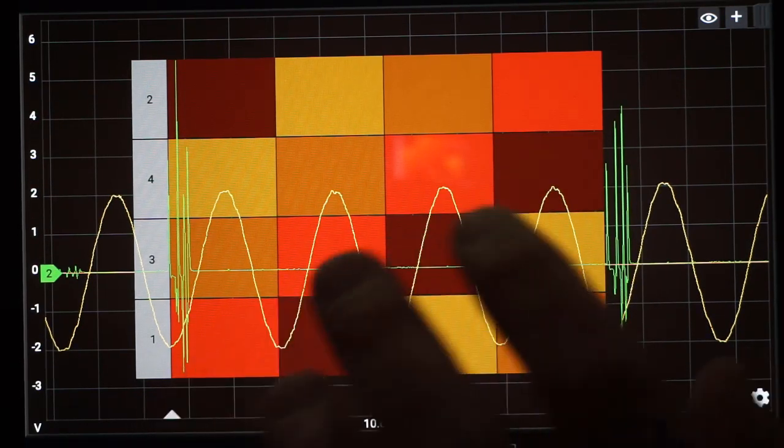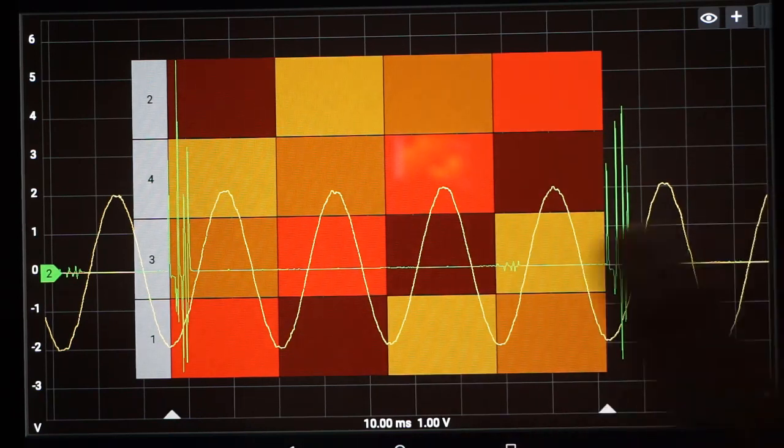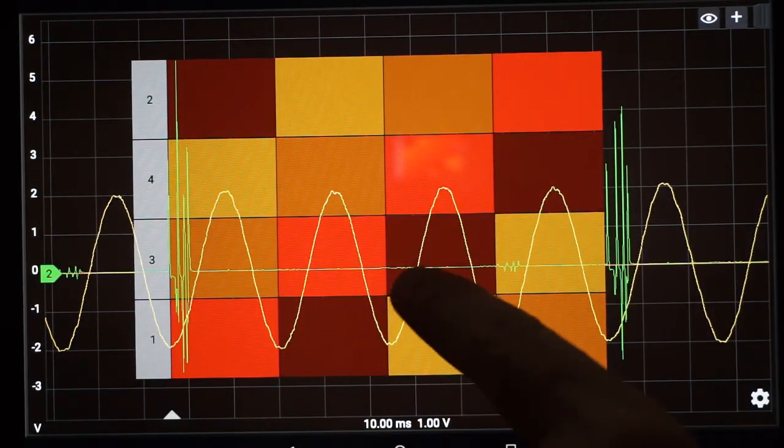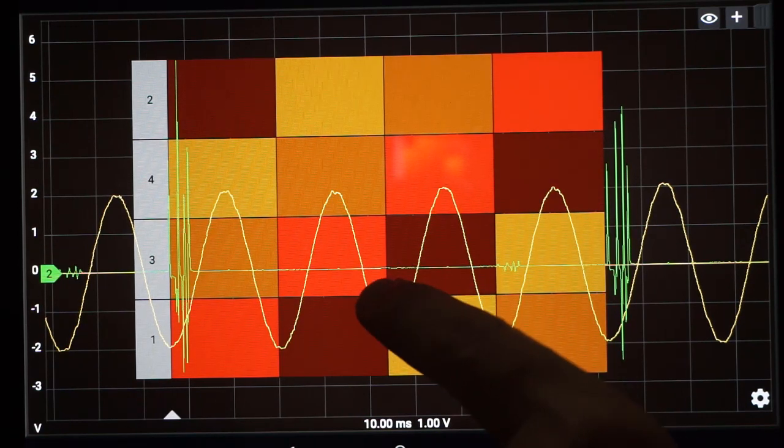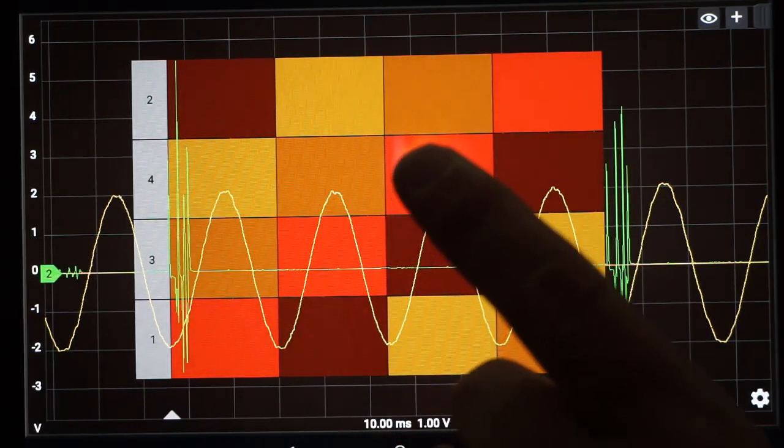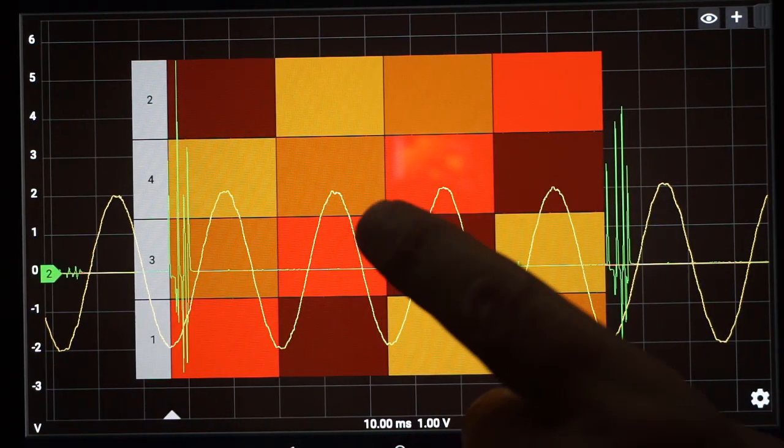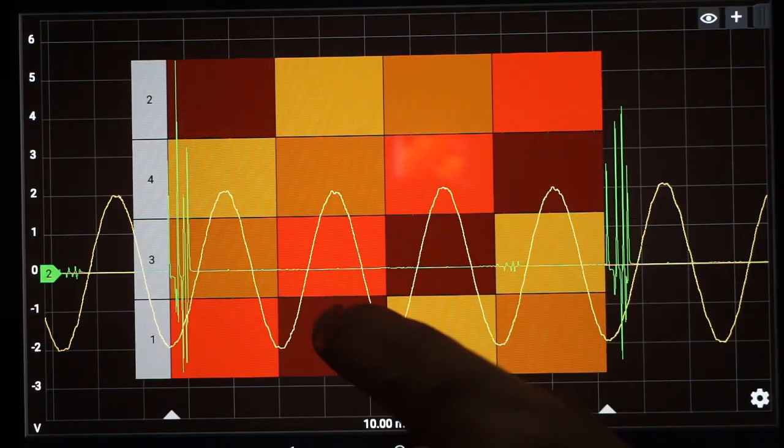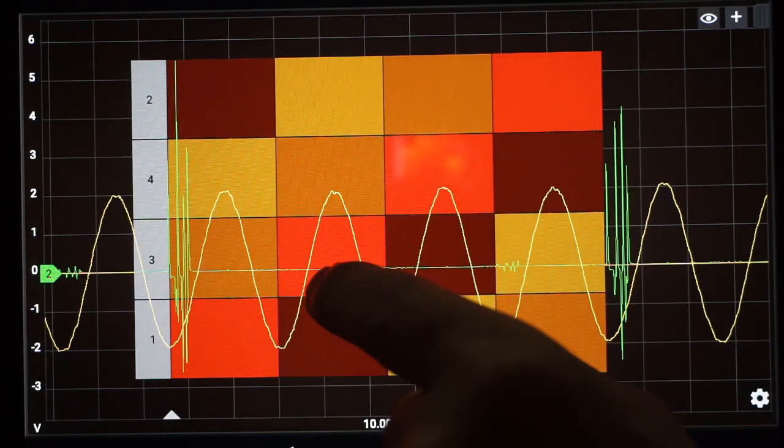When things go wrong this waveform gets very messy real quick. Part of the reason these waveforms get so distorted when there's an issue is due to the behavior of piezos. I think I can best illustrate that and best create a malfunction if we go to the exhaust pipe. The lessons we learned there can be applied here.